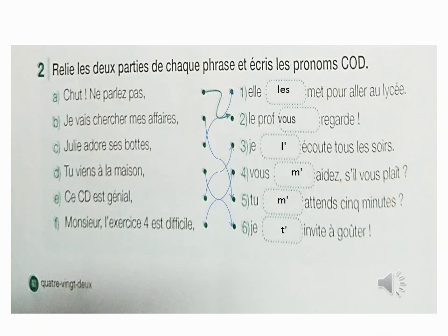Maintenant, à la même page, exercice numéro 2, page 82 : Relie les deux parties de chaque phrase et écris les pronoms C.O.D. La phrase A : Je vais chercher mes affaires. Alors, on va compléter avec 5 : Tu m'attends 5 minutes ? Le pronom personnel C.O.D. utilisé ici est M' (me).